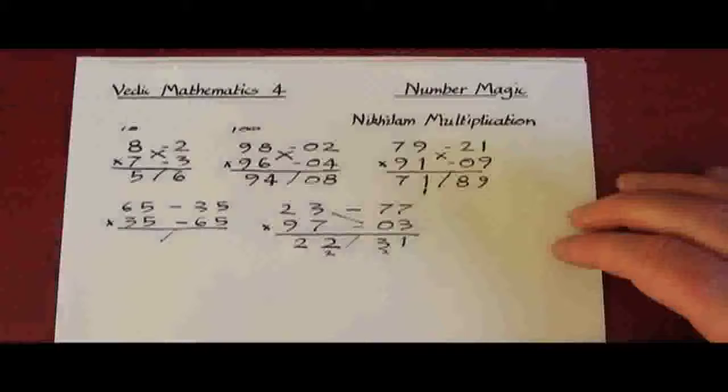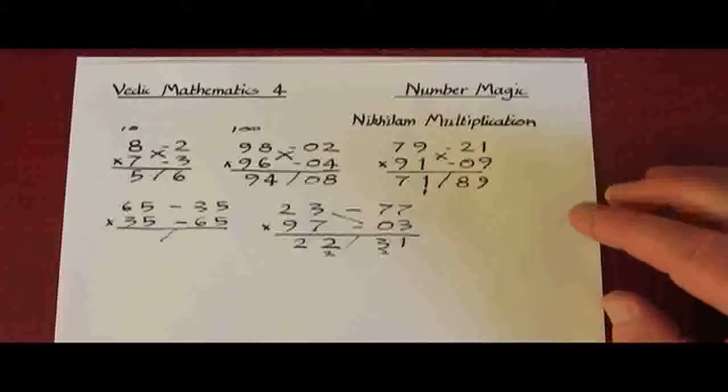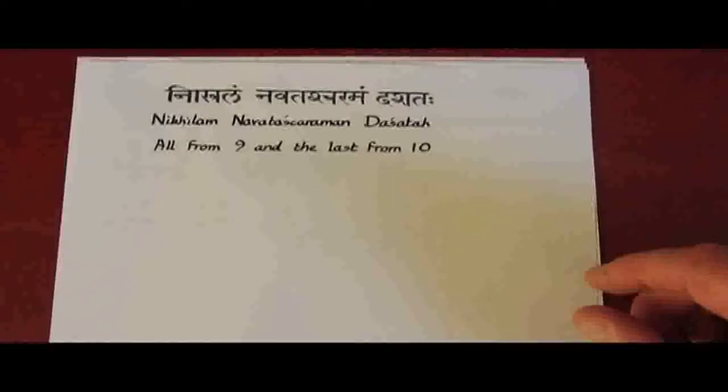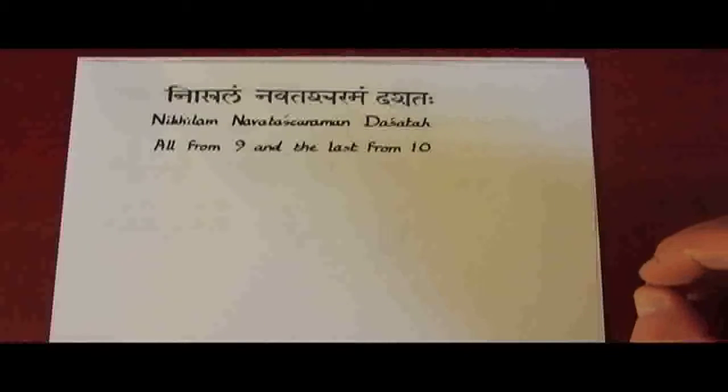Now the sutra or the rule, Nikilam it's called, is short for Nikilam Navatashcharaman Dashatah. That's the Sanskrit, and it means all from 9 and the last from 10.